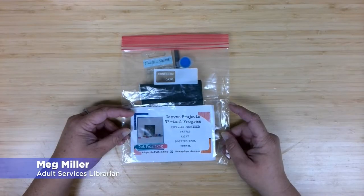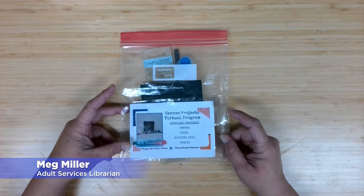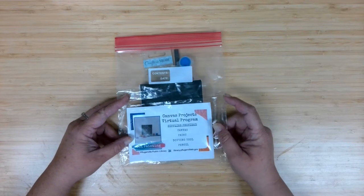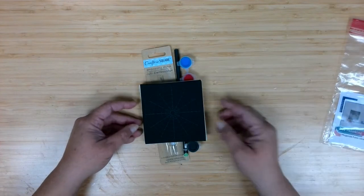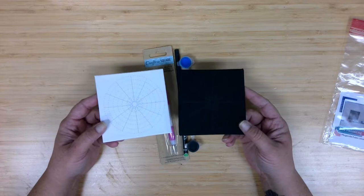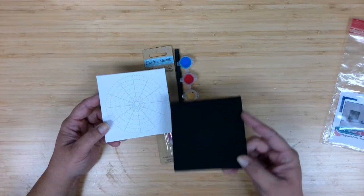The material supply kits for this month's Canvas Projects are coming in a quart sandwich bag because the canvas size is a little bit smaller. Inside the kits we are providing two 4x4 canvases.